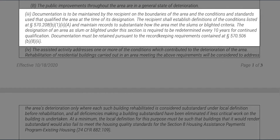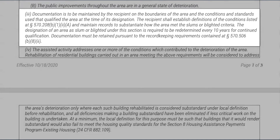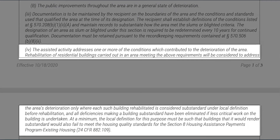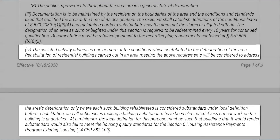Documentation must be retained pursuant to the record-keeping requirements contained at Section 570.506(b)(8)(ii). The final required condition to meet the slum and blight area national objective is that the assisted activity addresses one or more of the conditions which contributed to the deterioration of the area, and that contribution is documented.